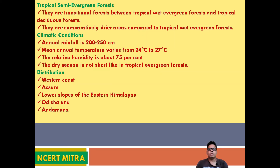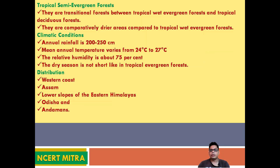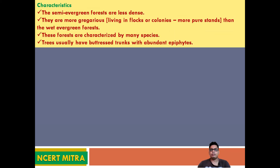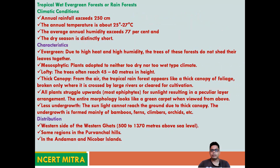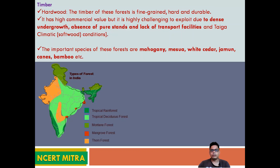Semi-evergreen forests are found on the western coast, some lower slopes of the eastern Himalayas, and Odisha. They form a transitional zone between tropical wet evergreen and tropical deciduous forests. Characteristics include dense forest cover, many species, and trees with abundant buttress trunks and epiphytes. In the next video, we will discuss tropical deciduous forest, desert forest, and more.